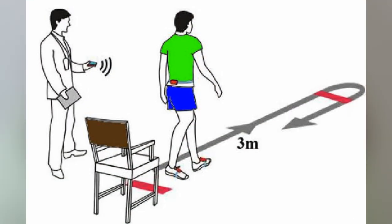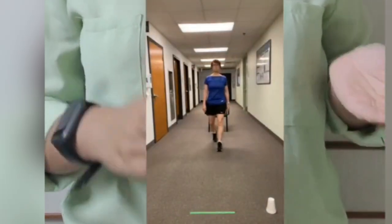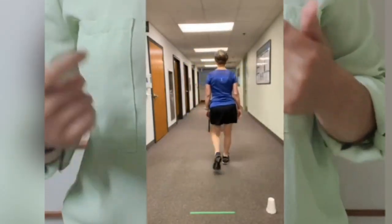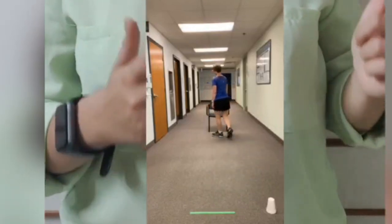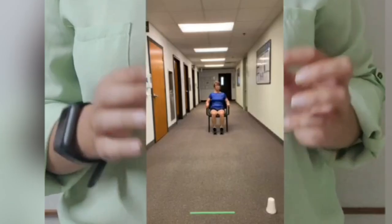The test will start with the participant seated on the chair. The therapist will mark a line at a distance of three meters from the chair and will place a cone or any object at that distance. The patient will have to follow the command of the therapist. At the command of 'go,' the patient will have to get up from the chair, walk towards the object, navigate the obstacle, come back walking, and then sit on the chair.